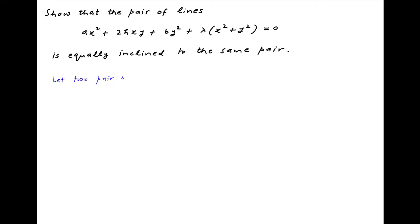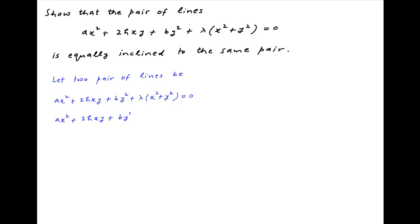Let's start by assuming two pairs of straight lines of the form given in the problem statement. The first pair is ax² + 2hxy + by² + λ(x² + y²) = 0. The second pair of straight lines is ax² + 2hxy + by² + μ(x² + y²) = 0.